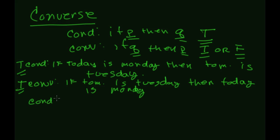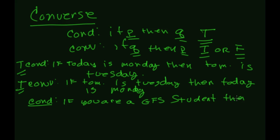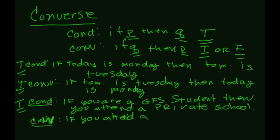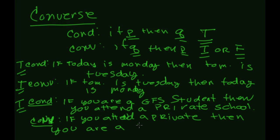Let's go back to our original GFS example. The conditional was: 'If you are a GFS student, then you attend a private school.' That's true — every one of our students who attends Garrison Forest attends a private school. Now let's look at the converse: 'If you attend a private school, then you are a GFS student.'